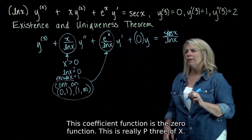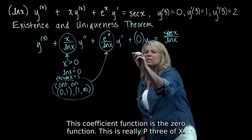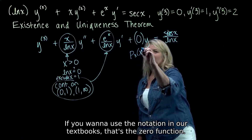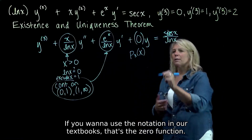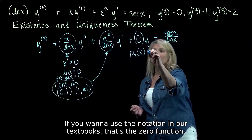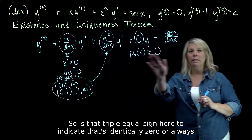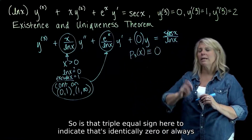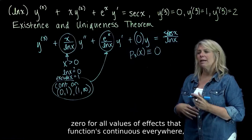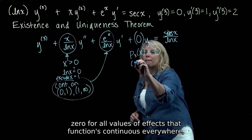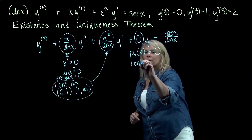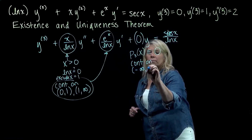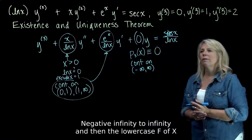This coefficient function is the zero function — p3(x) if you use the textbook notation. I'll use a triple equal sign to indicate it's identically zero, always zero for all values of x. That function is continuous everywhere, from negative infinity to infinity.